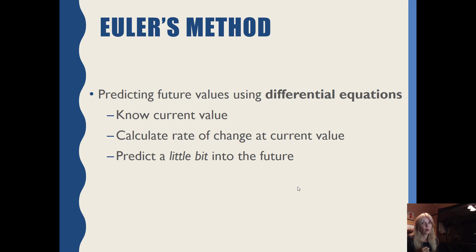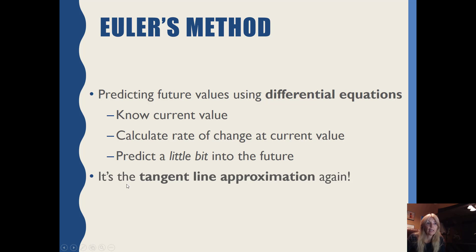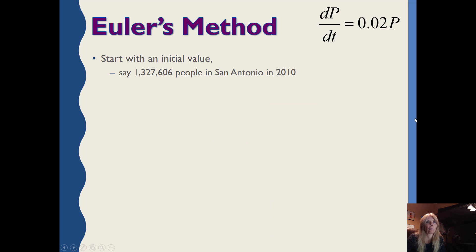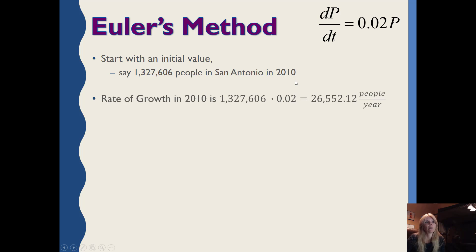Euler's method is something you've seen before — we call it the tangent line approximation. We like this because if we have differential equations, we can use it to predict values in the future. With the tangent line approximation, we know a value, we can calculate the rate of change, and then predict a little bit further. So if I have my change in population over change in time, my population is changing by 2% of whatever the population is at that time.